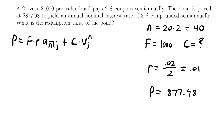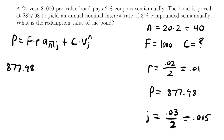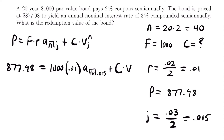We're told the bond yields an annual nominal interest rate of 3% compounded semi-annually, so the yield rate J equals 0.03 divided by 2, which equals 0.015. Now we plug everything into the price formula: 877.98 equals 1,000 times 0.01 times a-angle-40 at 0.015, plus the unknown redemption value C times the present value factor to the power of 40 at 0.015.